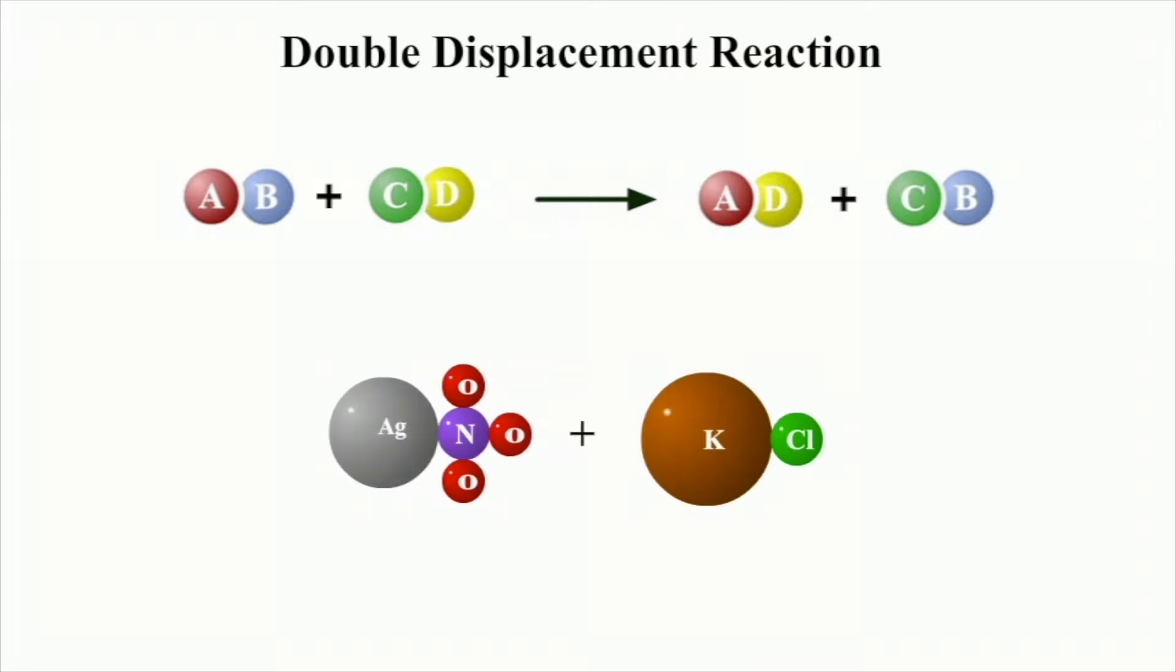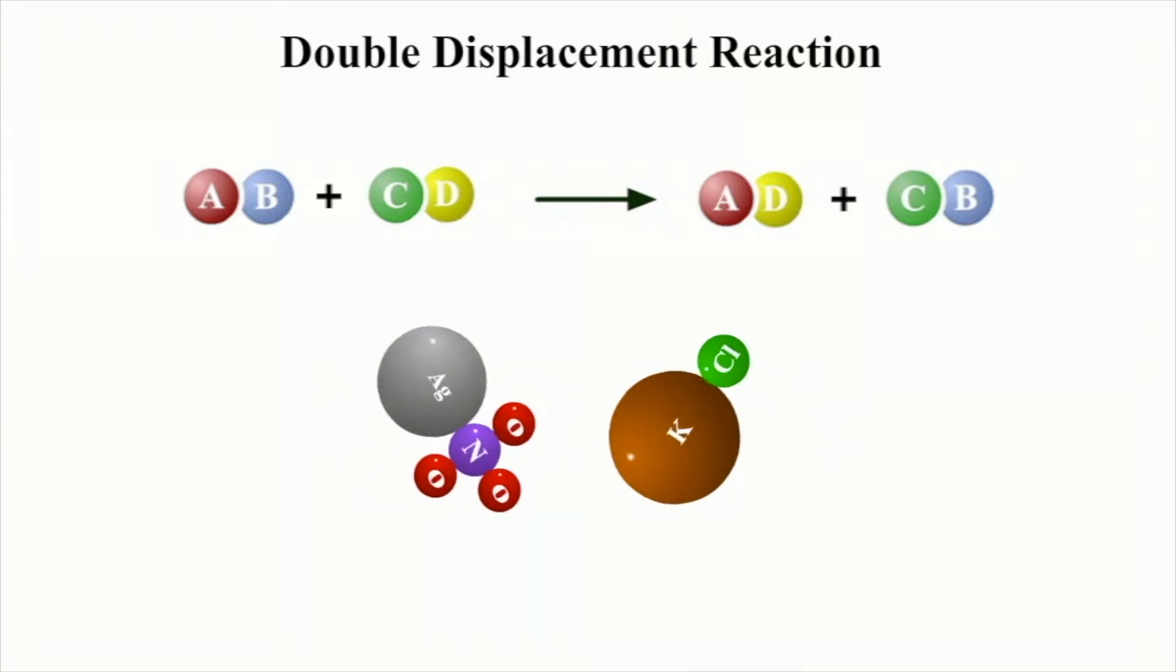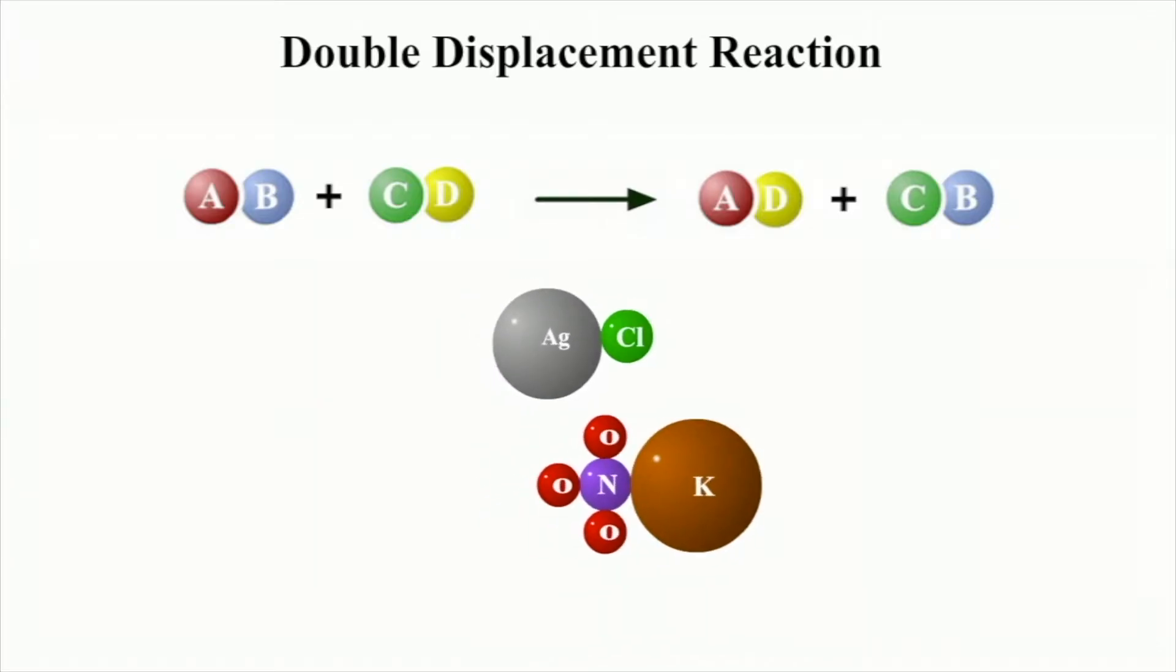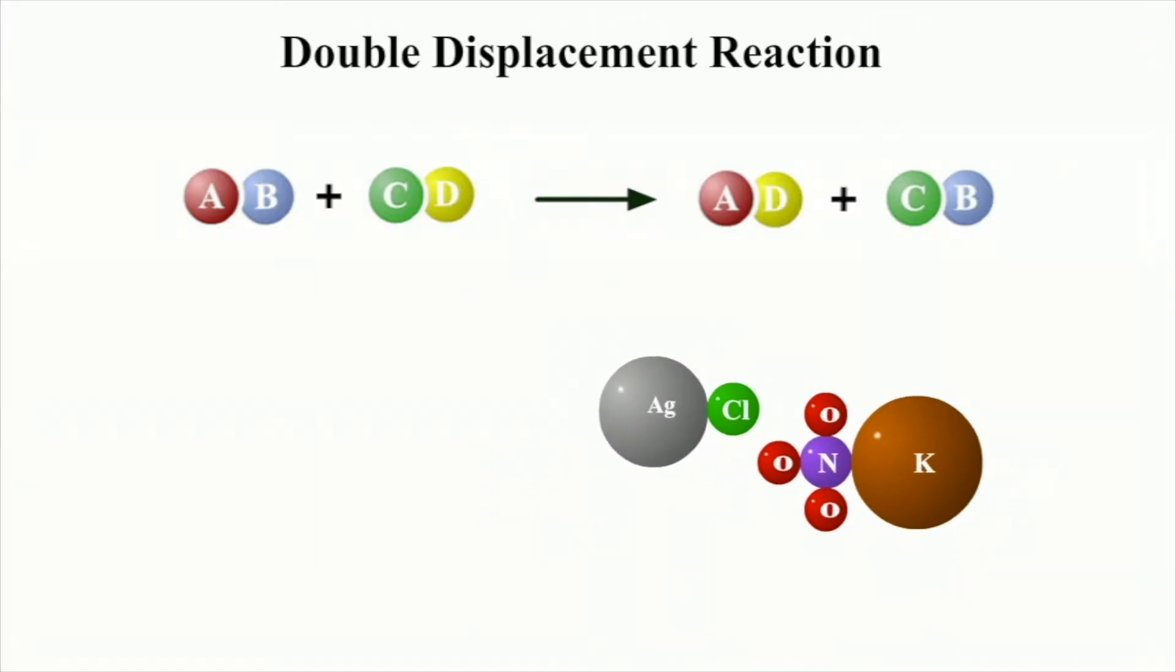In contrast, during a double displacement reaction, the cations and anions of two different molecules trade places. This reaction forms two different compounds. The general form of a double displacement reaction is AB plus CD goes to AD plus CB. In this case, A has traded places with C and B has traded places with D.